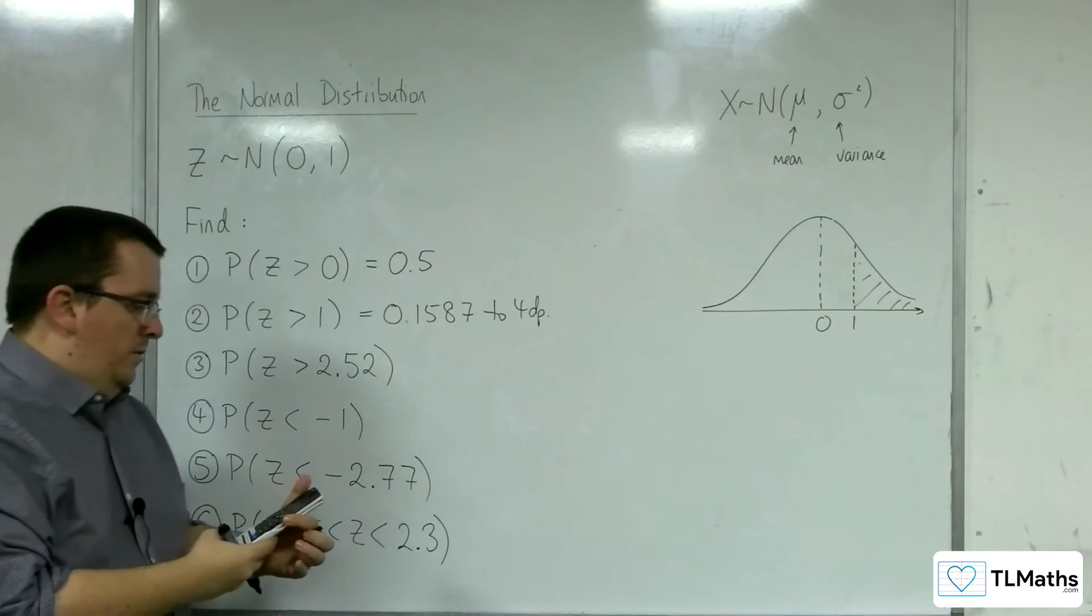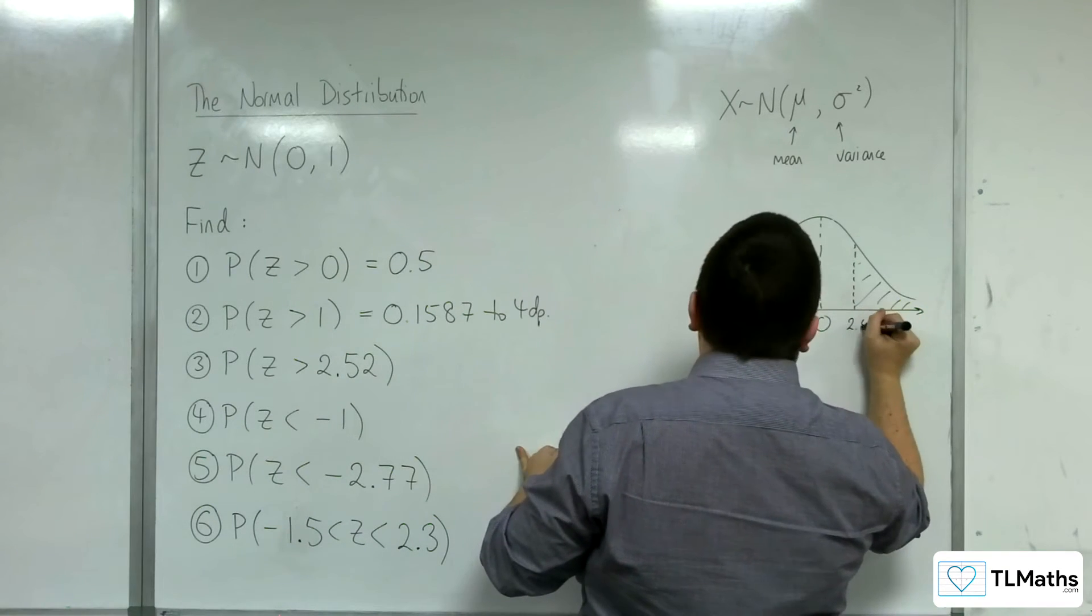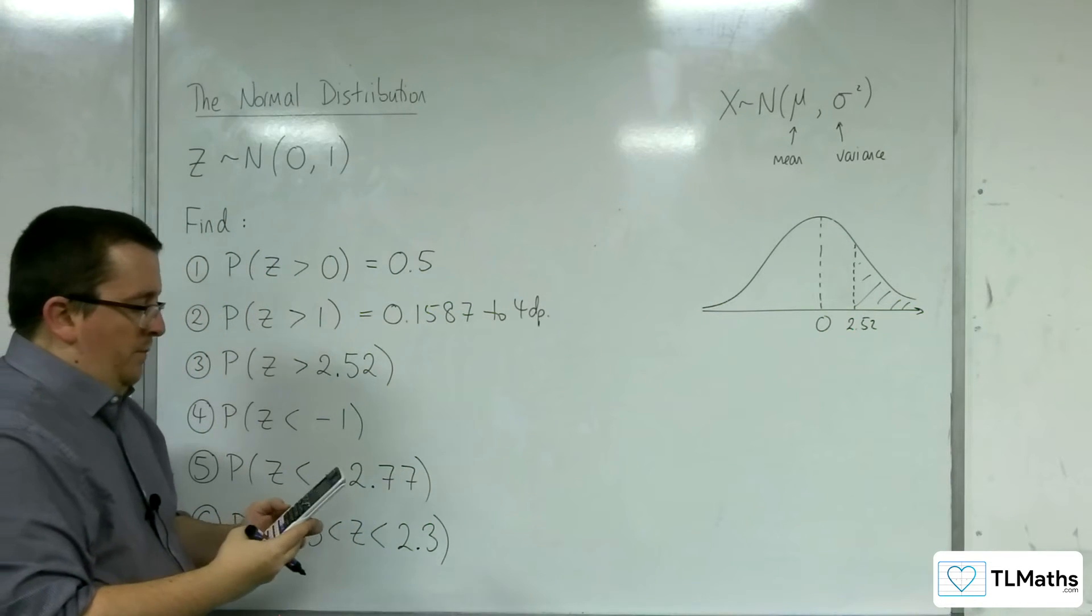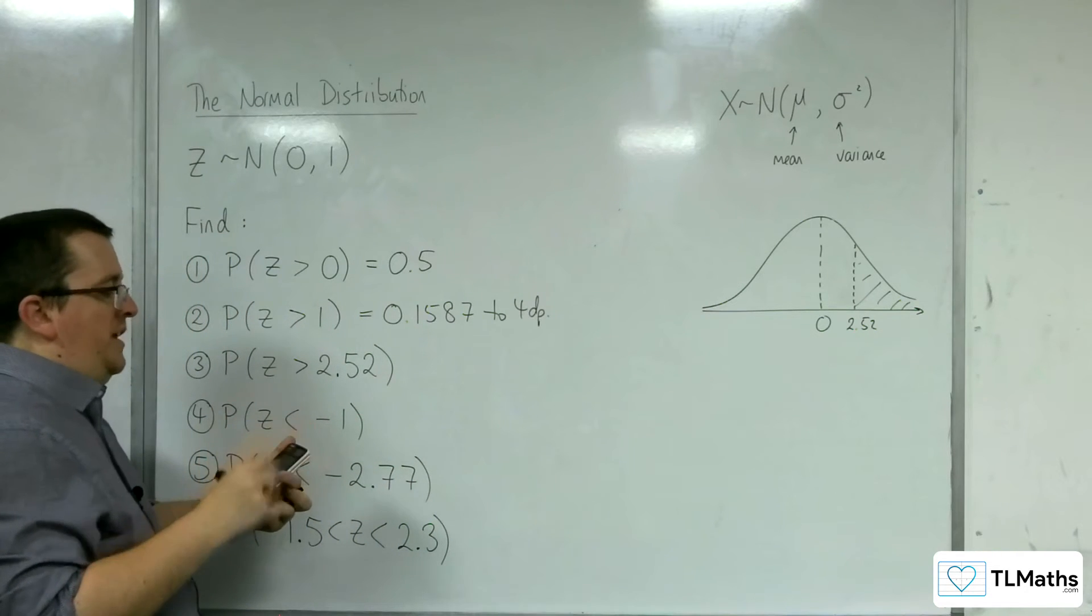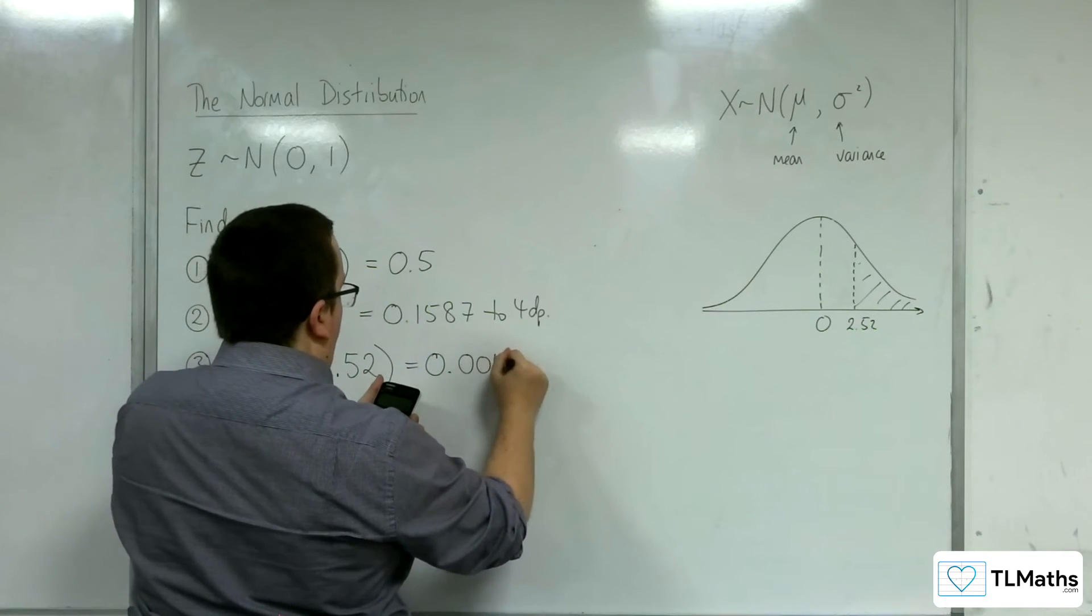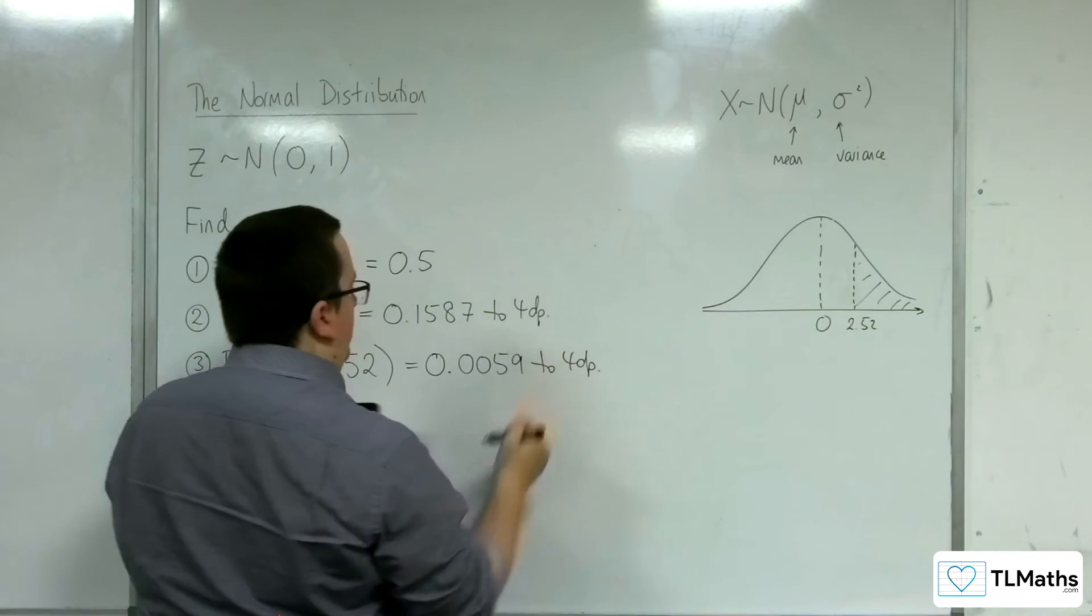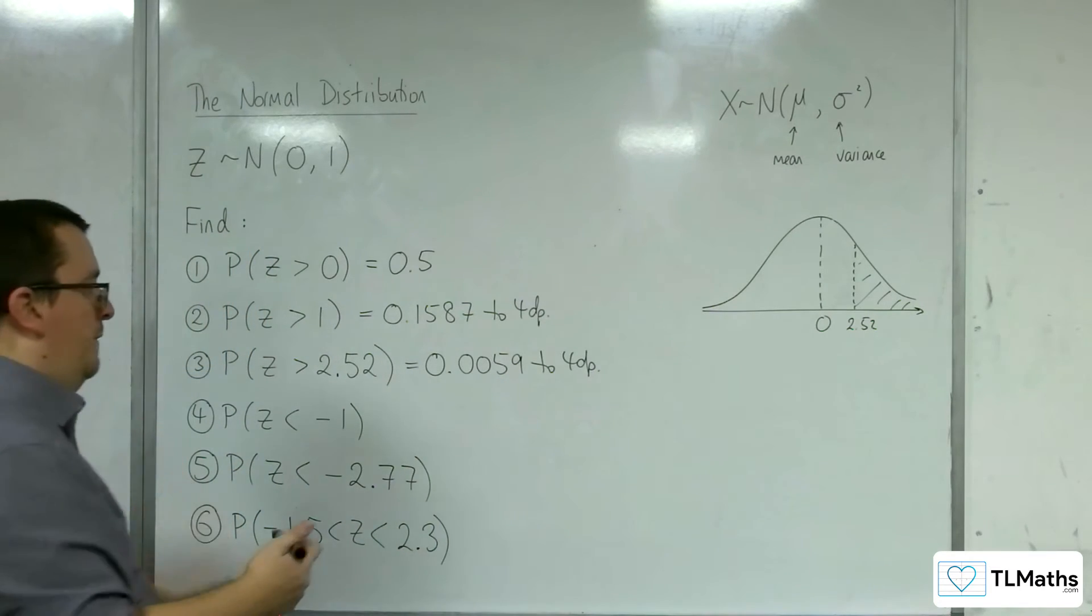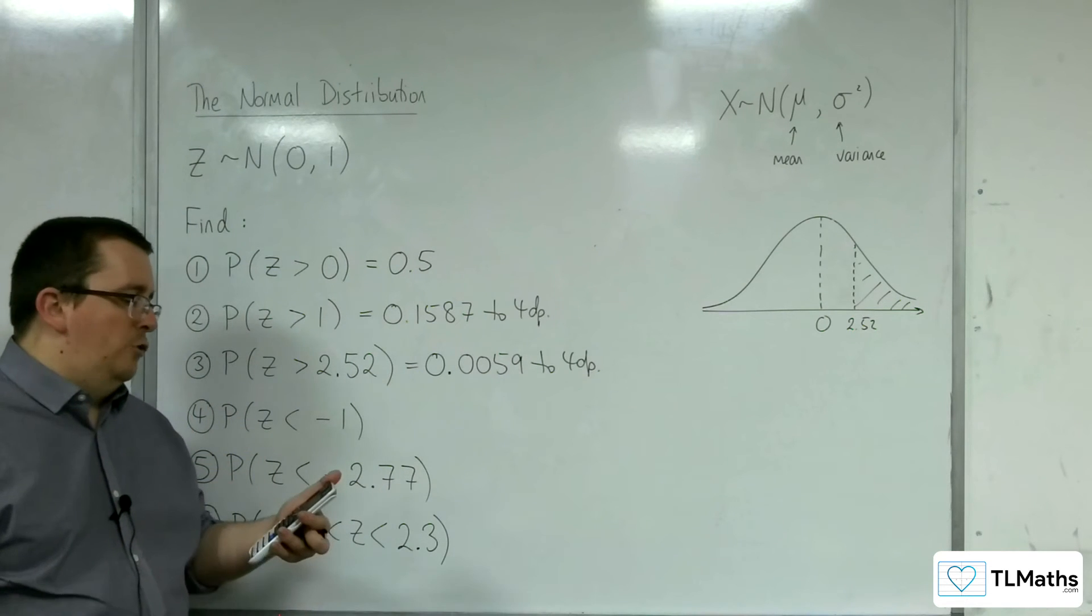So if we go back in, we're now going to look at the probability of Z being greater than 2.52. So let's change the lower value to 2.52. Press equals. We get 5.8677, etc., times 10 to the minus 3. So that would be 0.0059 to 4 decimal places. So 1, 2, 3 decimal places to the left, as you would be if you've got the experience of working with standard form.